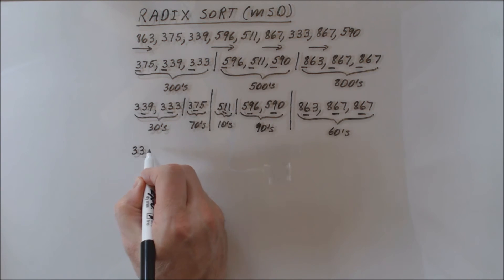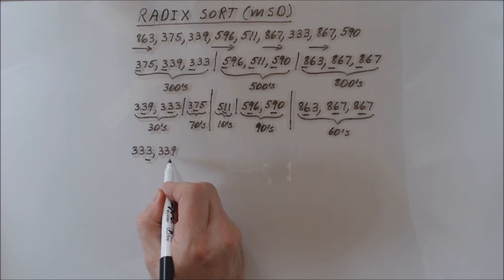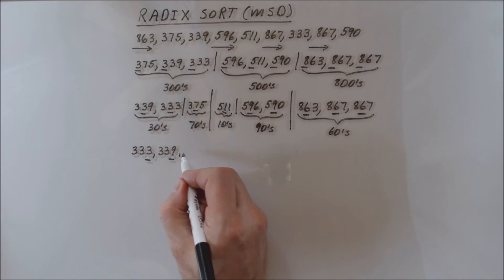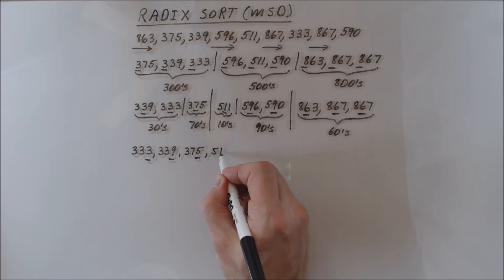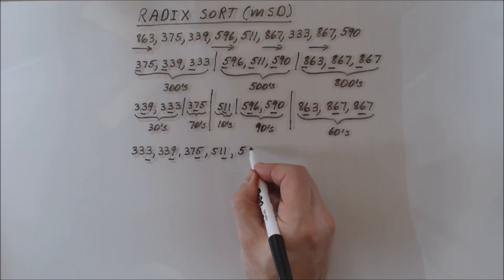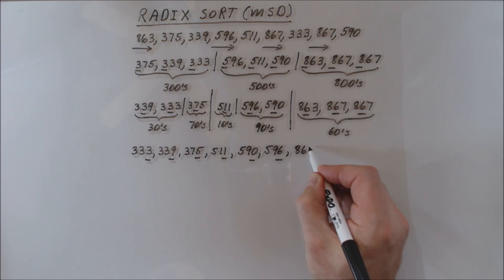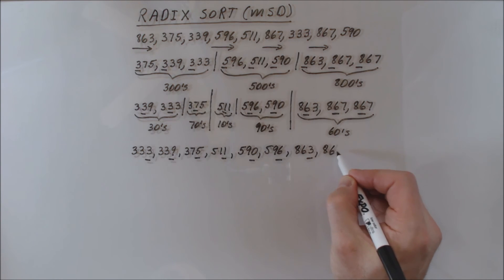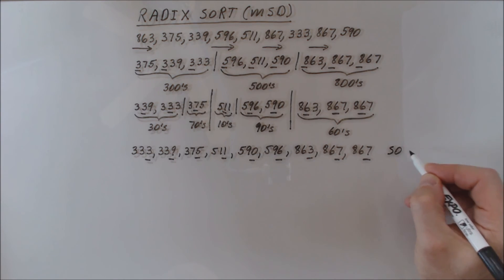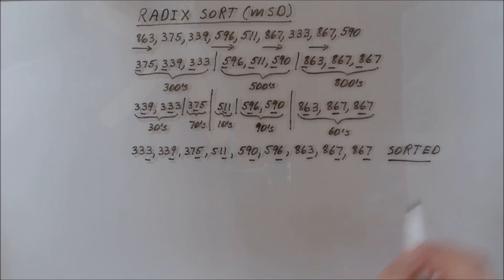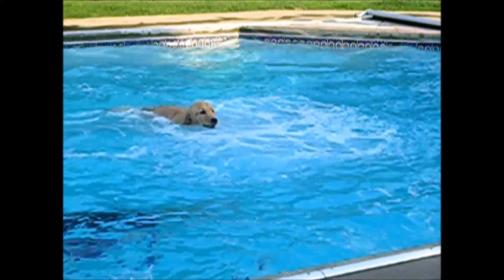In the third pass, radix sort works on each group of tens separately, using the next digit — the ones digit. Within the group of 330s, threes are grouped to the left of the group of nines. Within the 370s, there's only one element and nothing to do. Within the group of 510s, there's only one element and nothing to do. Within the 590s, the group of zeros is placed to the left of the group of sixes. Within the 860s, the group of threes is placed to the left of the group of sevens. The third pass is now done. This is the last pass because there are no more digits to sort by. Radix sort is done. All numbers have been sorted in increasing order from left to right.